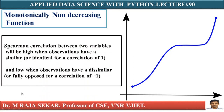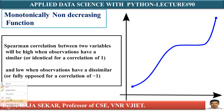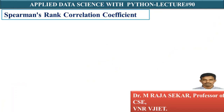If you observe the range of Spearman's Rank Correlation Coefficient, its minimum value is minus 1. When two datasets are dissimilar — if they are fully opposite — its value is minus 1. If they are similar, if they are identical, its value is plus 1. Therefore I can say its range is minus 1 to plus 1.